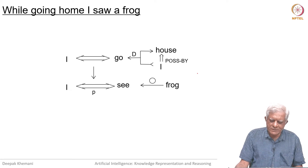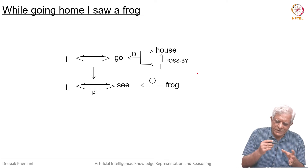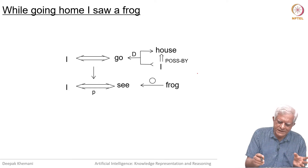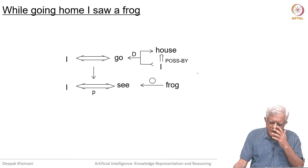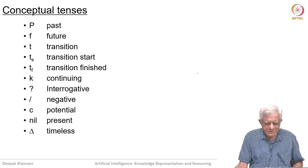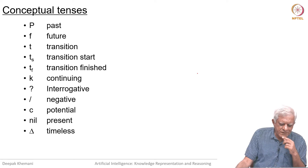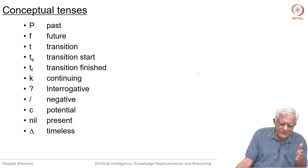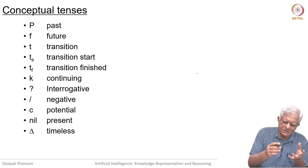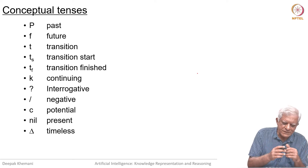While going home I saw a frog — so one conceptualization can mark the time for another. One thing is that I am going home and at that time I saw the frog. There are various labels we use which talk about when the event is happening, because we are talking about time. Whenever we talk about action, we have to talk about time and change.